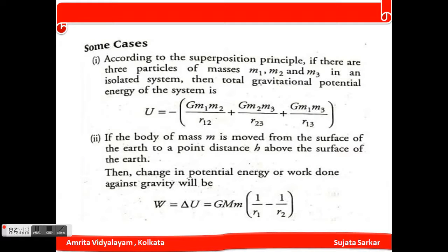Now here, if there are three particles of masses m1, m2, and m3 in an isolated system, then the total gravitational potential energy of the system is U equals minus Gm1m2 by r12 plus Gm2m3 by r23 plus Gm1m3 by r13. So this is the gravitational potential energy.